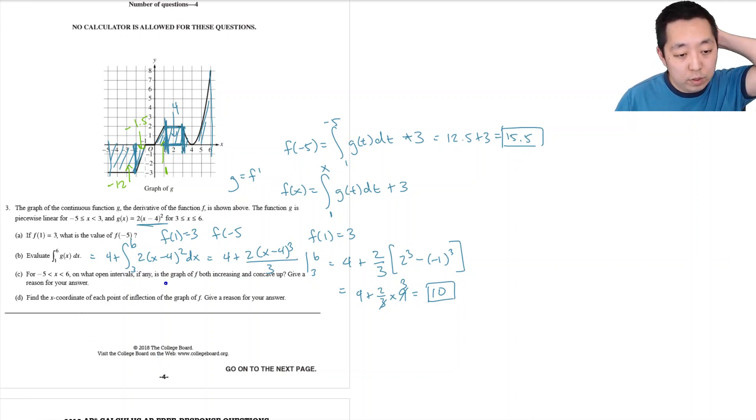Okay, on what open intervals, if any, is the graph f both increasing and concave up? Okay, to be increasing, f prime has to be greater than 0, but that's the same as saying g is greater than 0. So where is g greater than 0? Let me erase some of this stuff just to know we've done the areas. Where is g greater than 0? g is greater than 0 between 0 to 6, so that happens from 0 to 6.